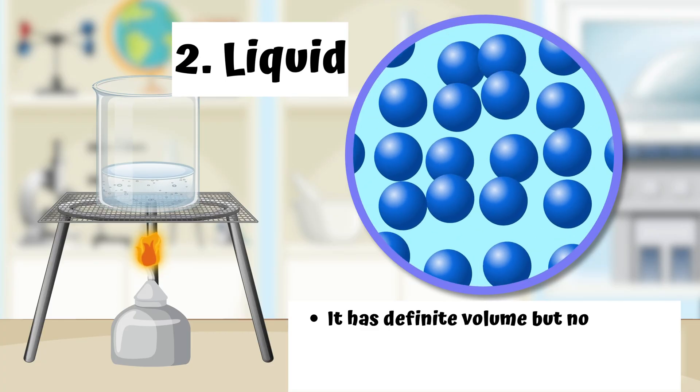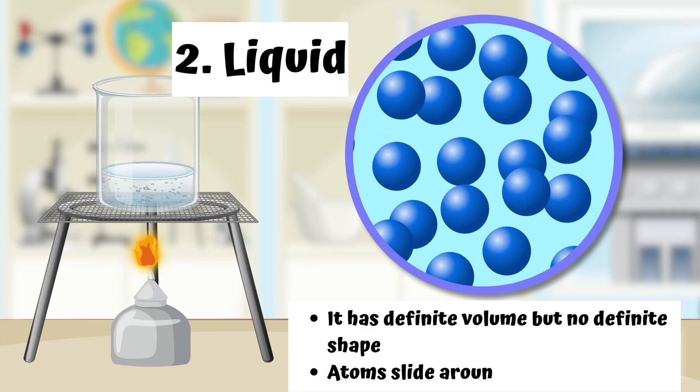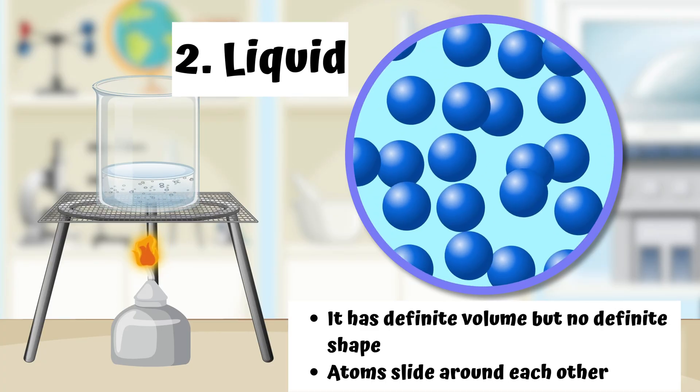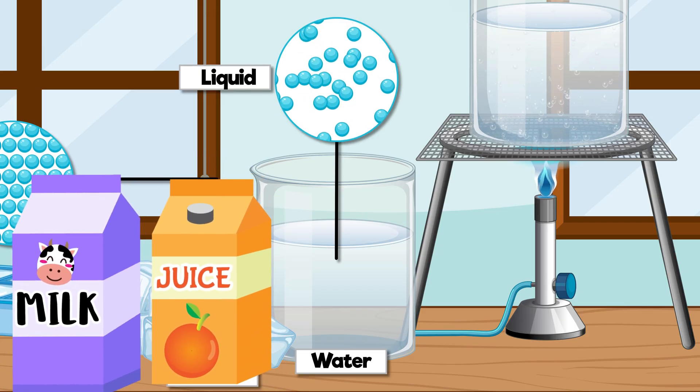Liquid. It has definite volume but no definite shape. Atoms slide around each other. Some examples are water, milk, and juice.